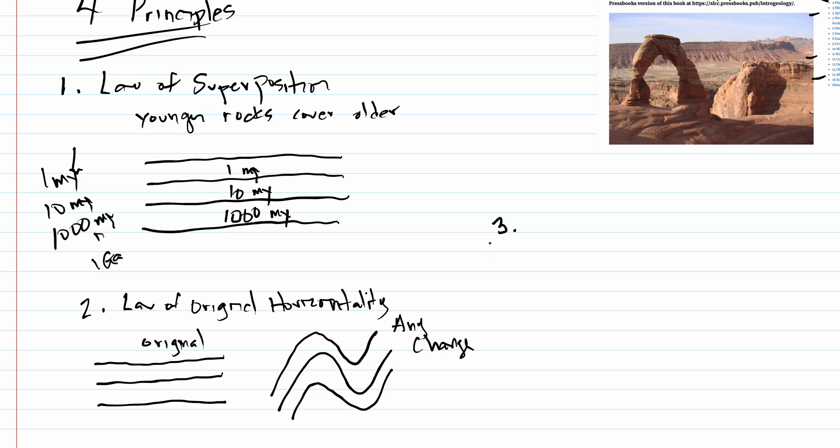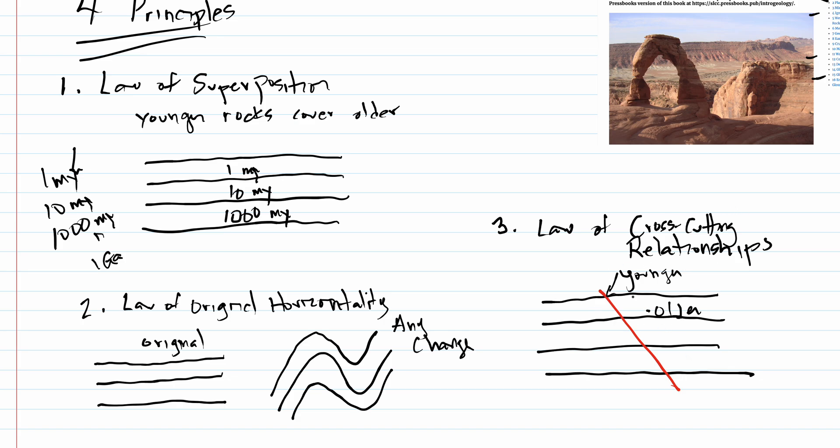Number three, our third principle is the law of cross-cutting relationships. This law basically applies to faults and magmas. The idea would be, if these are our rocks, anything that cuts across them, boom, we've got something that cuts across these black layers. That black layer is older. This is older. And this red is younger. The reason we know that is because it cuts across it. The older rocks had to be there in order for the younger ones to cut across it. We'll practice this in various lab exercises.